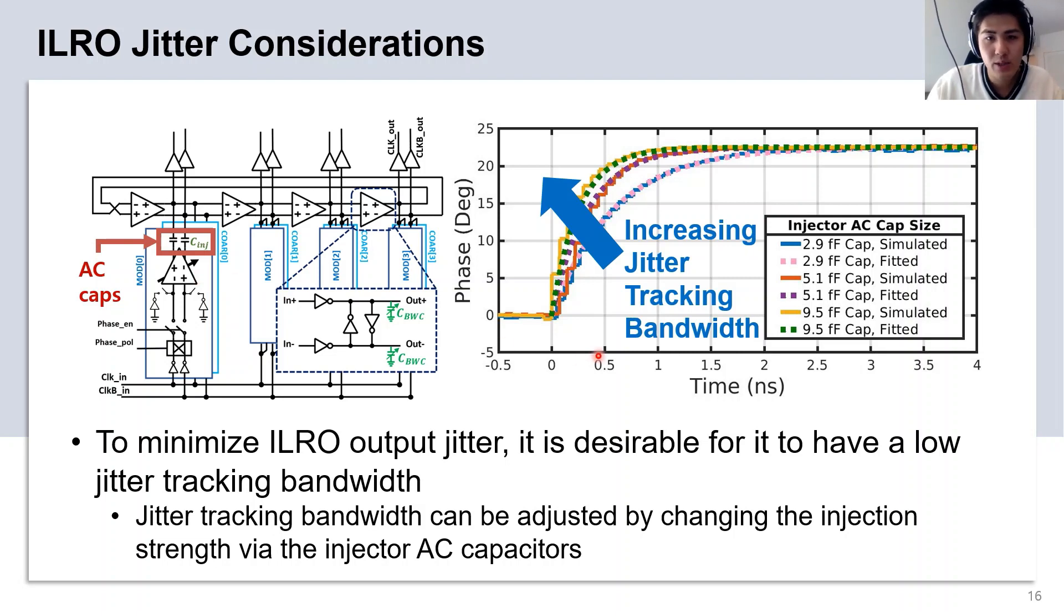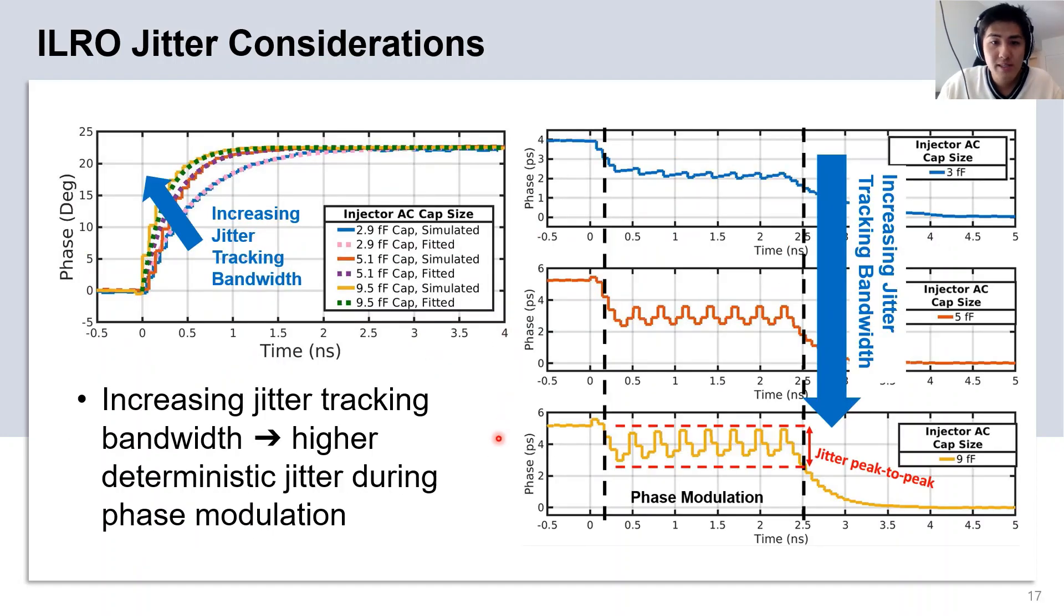As you can see in this diagram here, by increasing the capacitance, we decrease the settling time of the output step phase response, which is equivalent to increasing the jitter tracking bandwidth. From these transient plots on the right-hand side, by increasing jitter tracking bandwidth, we also increase the deterministic jitter of the ILO's output phase during phase modulation.